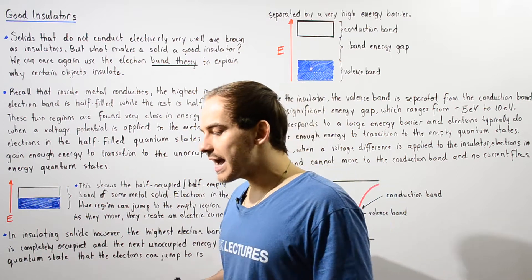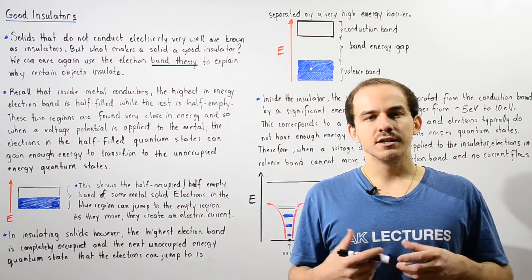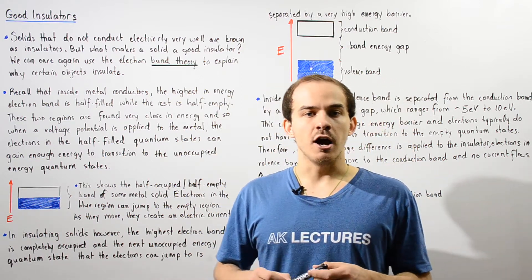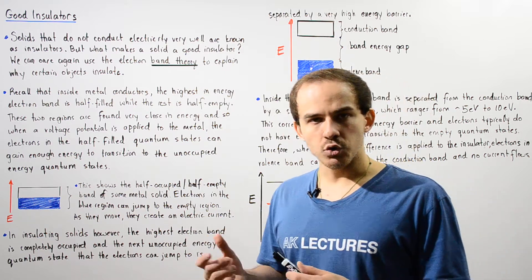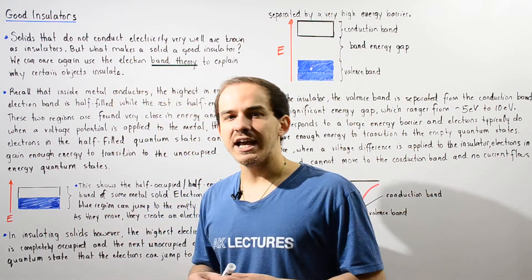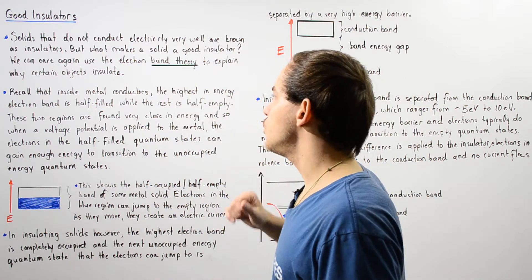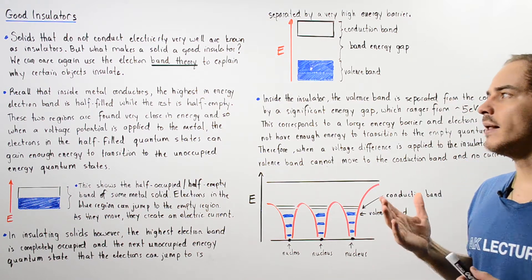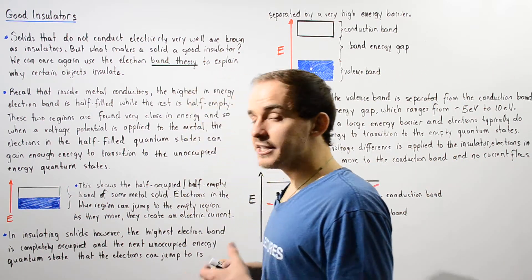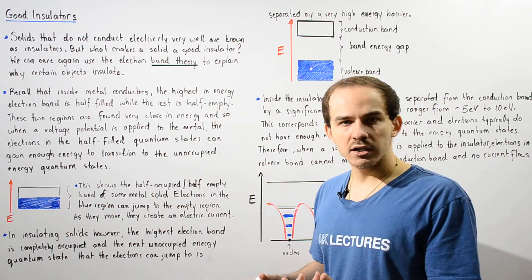What exactly makes an object a good insulator? To answer this question, we're going to use the electron band theory of solids. In the same way that we used the electron band theory to help explain why objects conduct electricity, we're going to also use band theory to help explain why certain objects insulate. Let's begin by recalling a bit of information about conductors.